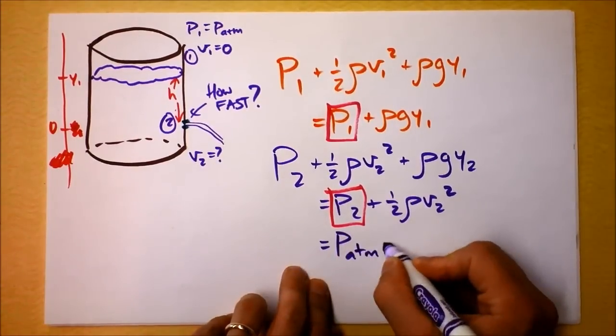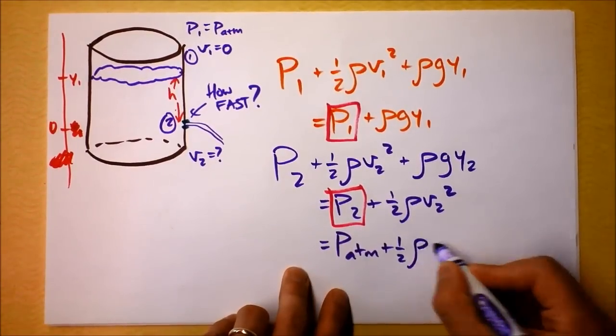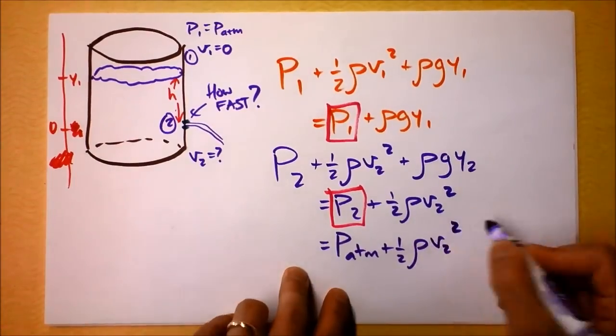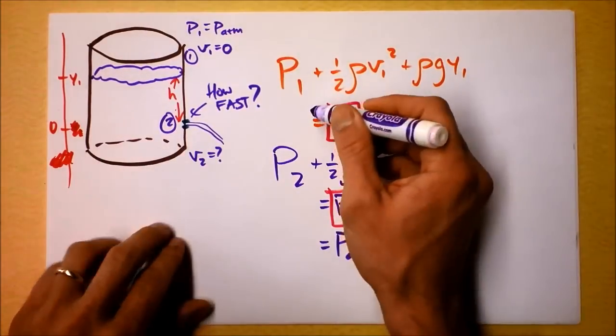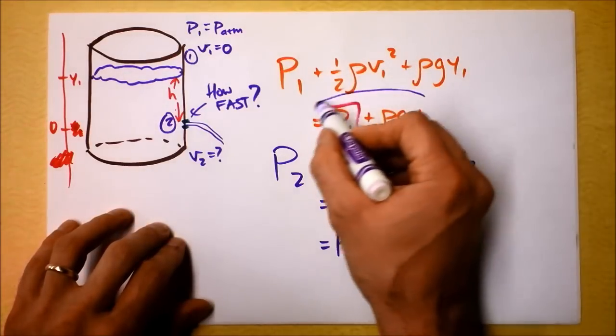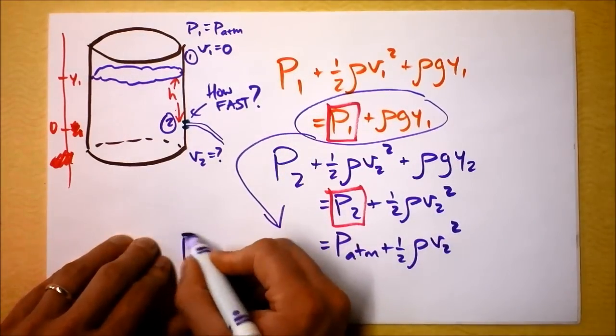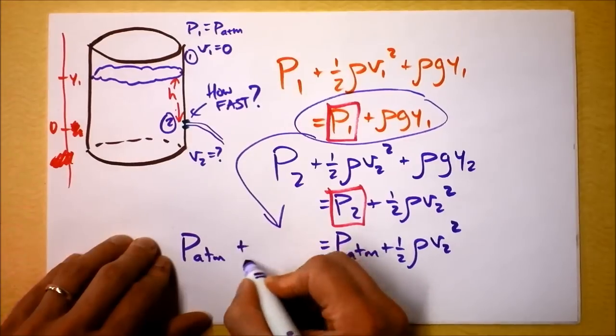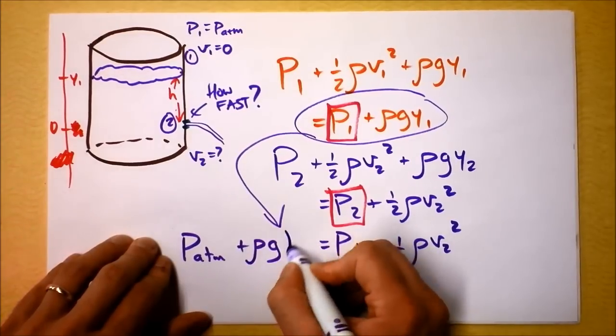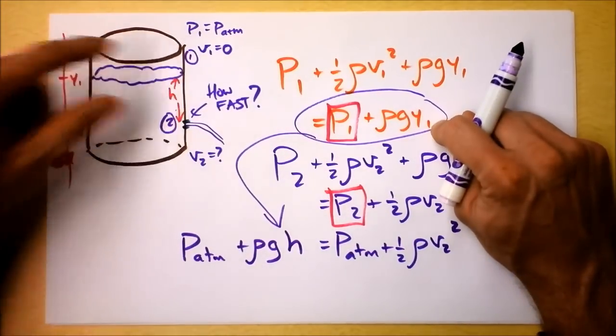This is atmospheric pressure plus 1 half rho times the speed square. And, then I'm going to take this equation here, and I'm going to bring it down there. And, I'm going to write that that's atmospheric pressure plus rho GH. Y1 is equal to H.